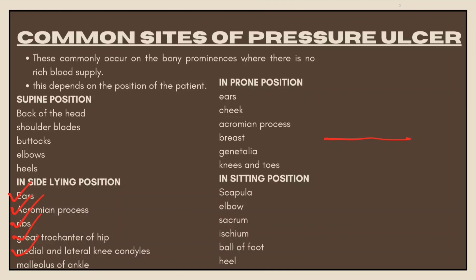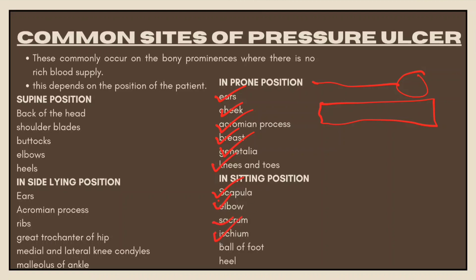For the front-lying (prone) position, the common pressure ulcer sites include the scapula, elbow, sacrum, ischium, ball of foot, and heel.